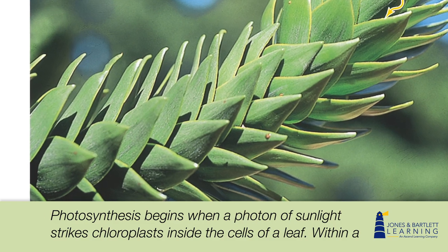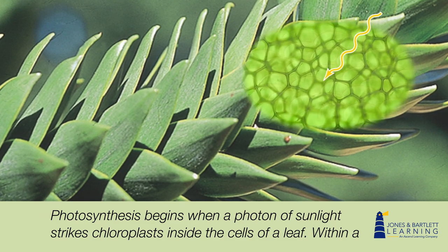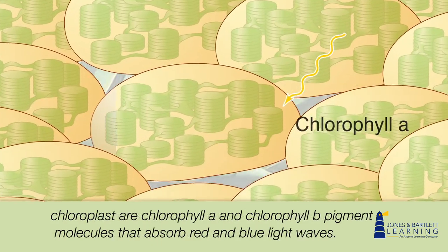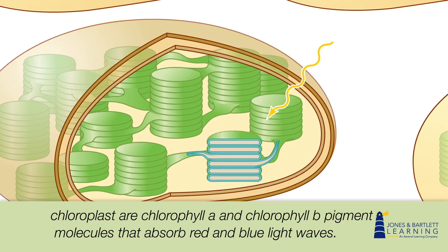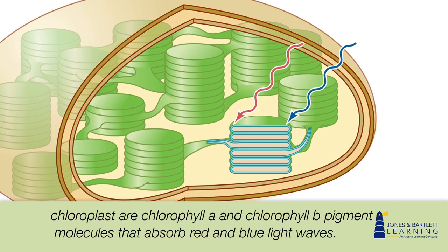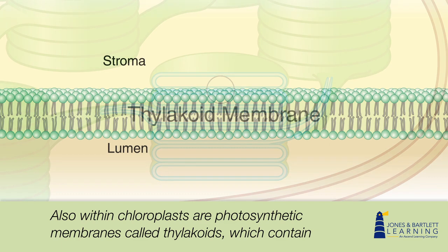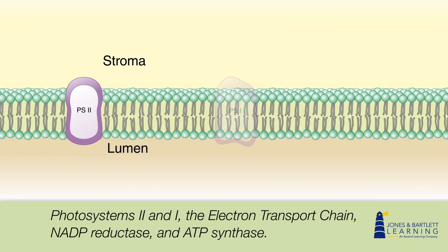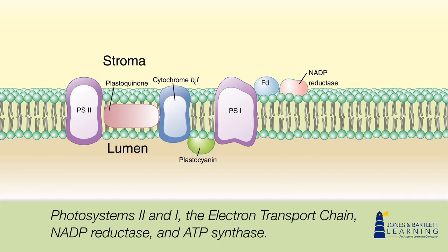Photosynthesis begins when a photon of sunlight strikes chloroplasts inside the cells of a leaf. Within a chloroplast are chlorophyll A and chlorophyll B pigment molecules that absorb red and blue light waves. Also within chloroplasts are photosynthetic membranes called thylakoids, which contain photosystems 2 and 1, the electron transport chain, NADP reductase, and ATP synthase.